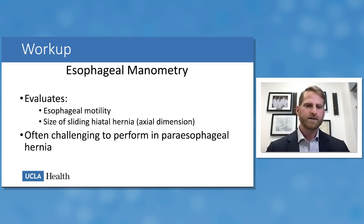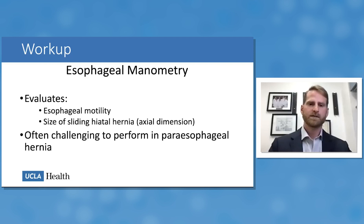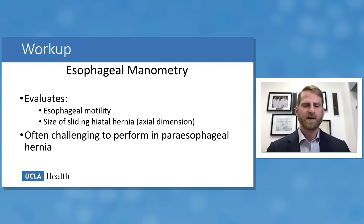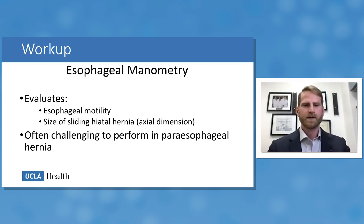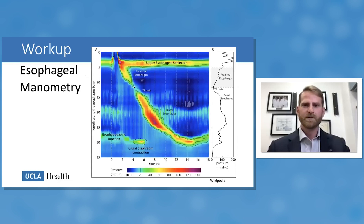Esophageal manometry is used less to diagnose the hernia itself, though it gives a sense of axial hiatal hernia size, and more to determine what management to pursue — especially when considering surgery. It evaluates the motor function or motility of the esophagus, rules out other motility disorders such as achalasia, and assesses the strength of esophageal peristalsis. It is often challenging to perform in paraesophageal hernias due to angulation of the GEJ making it difficult to advance the probe into the stomach.